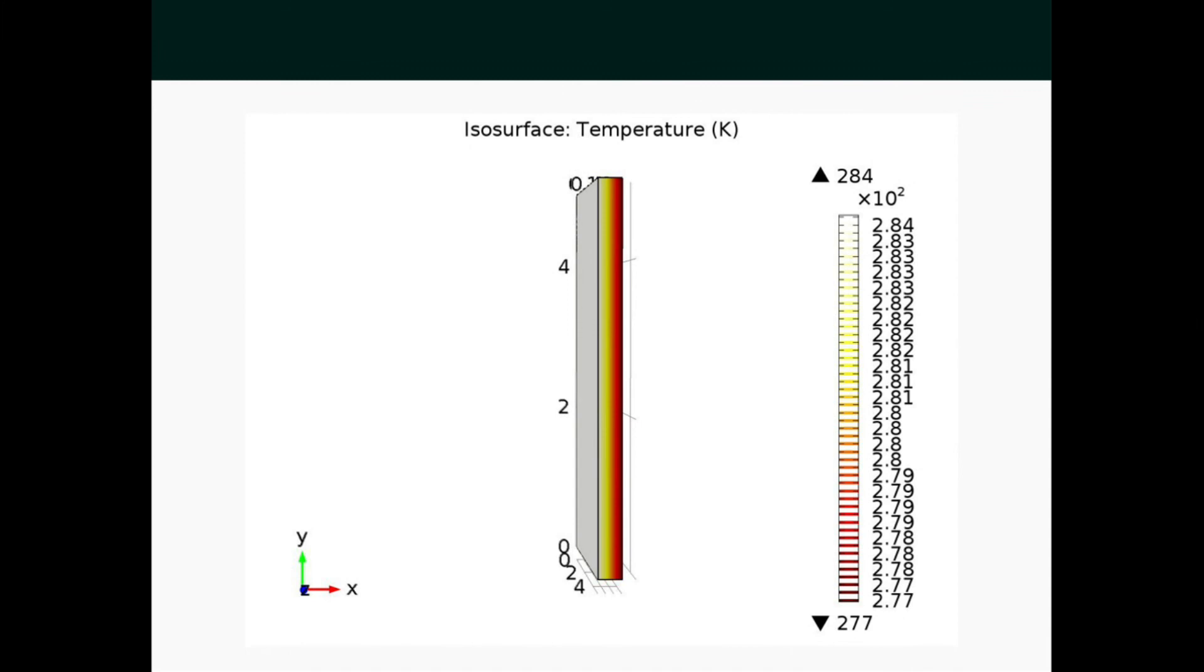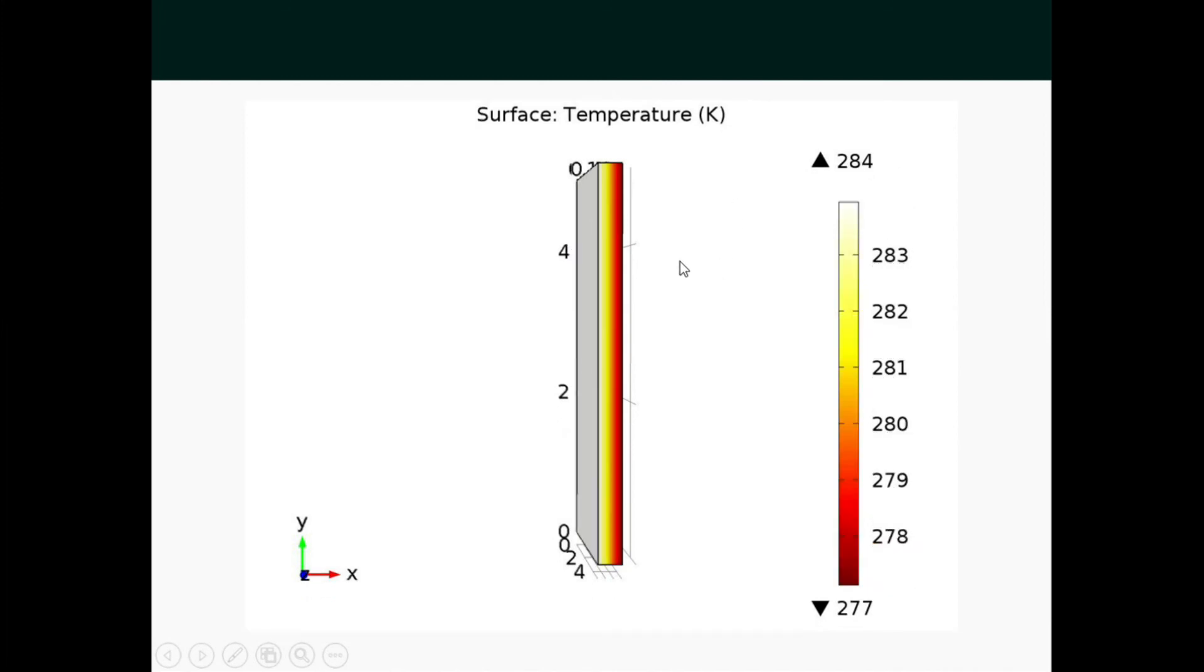Here are the results which we have got. This slide shows the isothermal contour plot that we have plotted. And this one shows the surface temperature plot that we have plotted. This shows the temperature distribution along the cross section of the wall, along the thickness of the wall. These are the results which we have obtained from COMSOL.